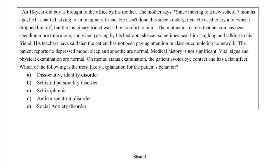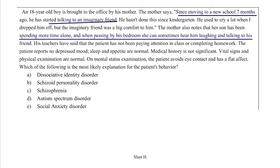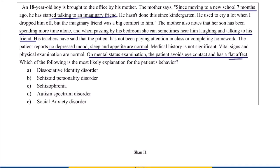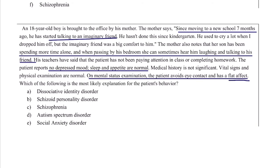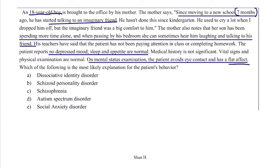Case study 3: An 18-year-old boy who, since moving to a new school seven months ago, started talking to an imaginary friend — something he hadn't done since kindergarten. He spends more time alone; teachers hear him laughing and talking in his room. He is not paying attention in class. Mental status examination shows he avoids eye contact and has a flat affect. The diagnosis here is schizophrenia — an important point is that schizophrenia can occur even in children.